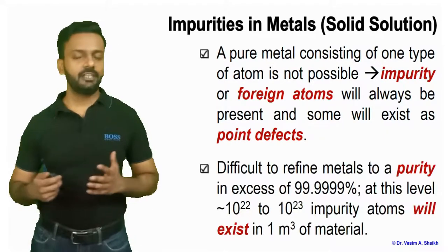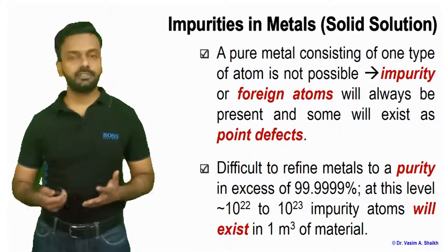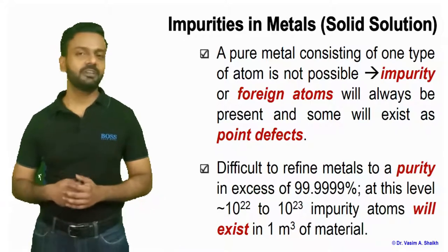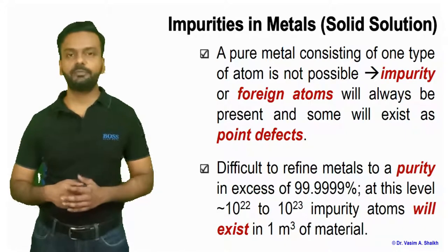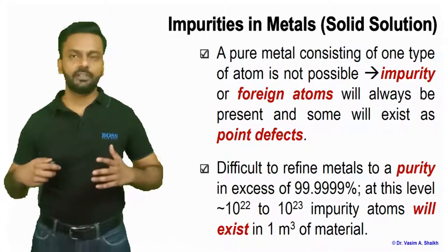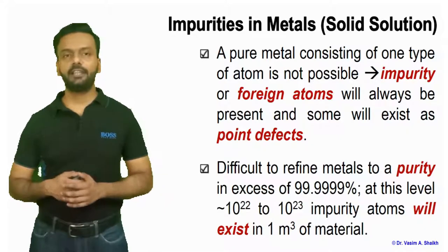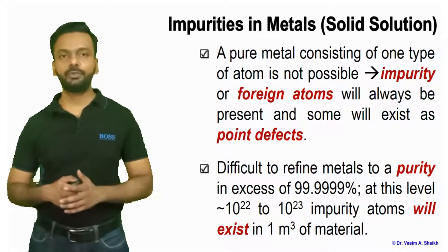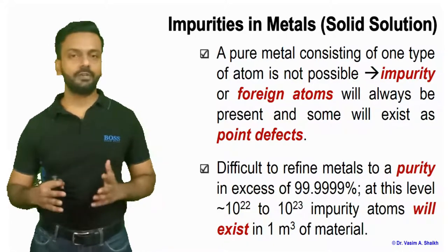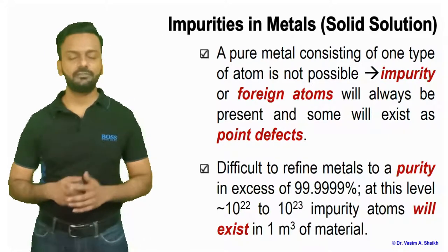Even when we buy gold, we say it is not 100% pure — it will be 99.99999% pure, but no one can guarantee 100% purity because some impurity, some point defect, some foreign atom will always be present. It can be at a level of 10 raised to the power of 22 to 10 raised to the power of 33 in 1 meter cube of material.